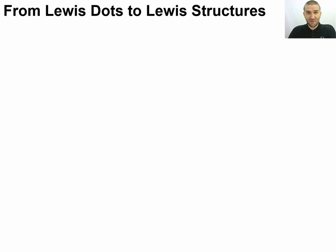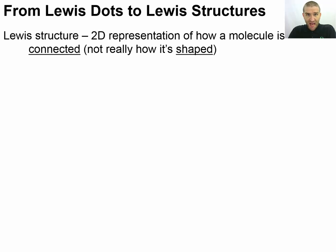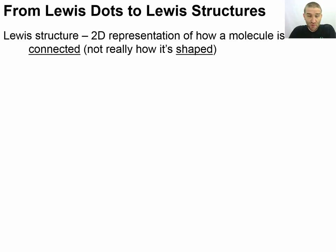There's a careful caution to keep in mind anytime you're dealing with a Lewis structure: it's a flat-land representation of how the molecule is connected. It's not really how it's shaped — it's all about the connections. It's like squashing a subway map and just showing the connections between the different terminals.